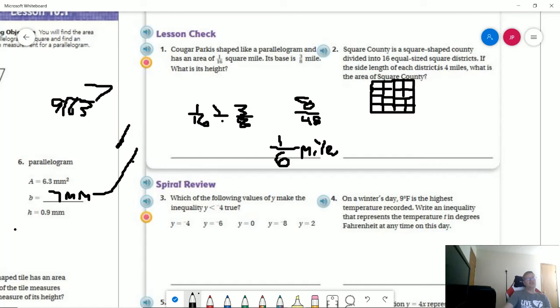The side length of each district is 4, so this would be 4, 8, 12, 16 times 16. And that should give us 160 plus 80 plus 240, so it should be 256 for that. And that would be miles squared.